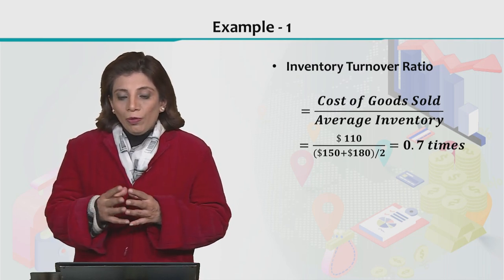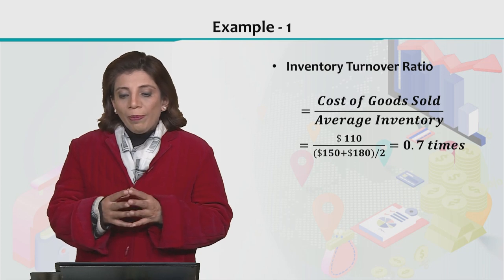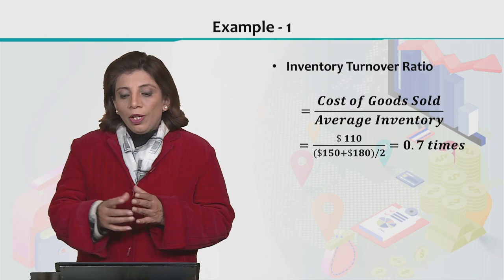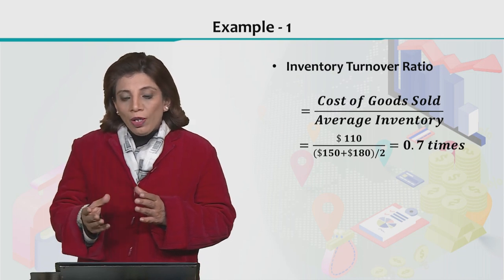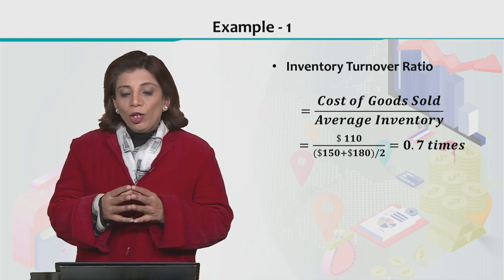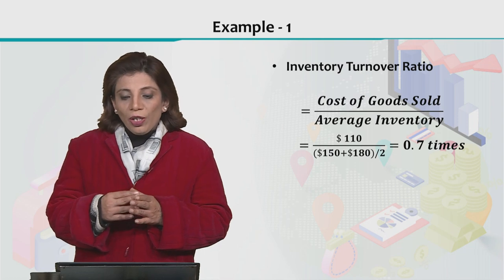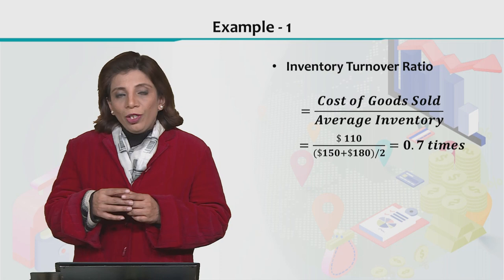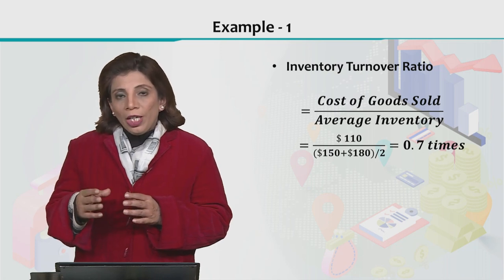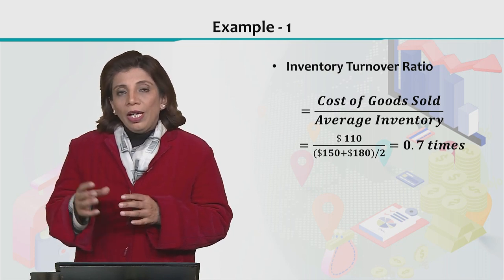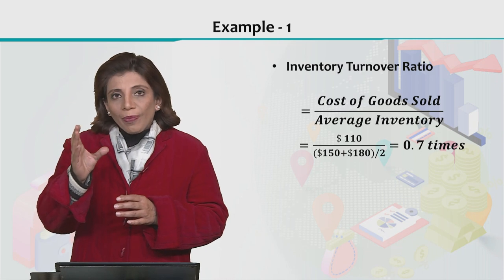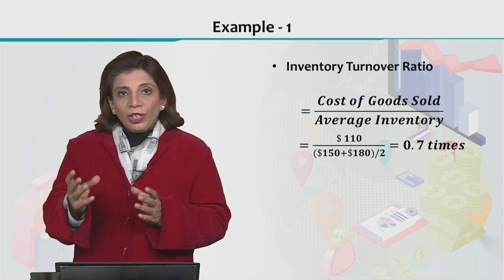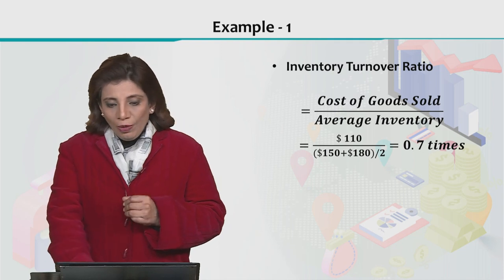For example, the cost of goods sold for a company in a certain year was $110, and in the beginning time period it had inventory of $150, and at the end of the time period the inventory was $180. You calculate the average inventory value and divide the COGS by it, giving you a value of 0.7 times.